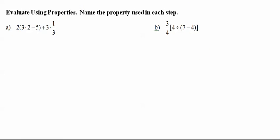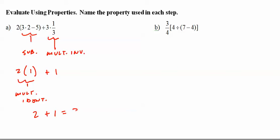So evaluate using properties and name the properties in each step. We could substitute what that equals. 2 times 6 minus 5 is 1. And this of course is multiplicative inverse. This would be multiplicative identity. And then I don't even know what to call this. Substitution, I guess. Don't get hung up on it.